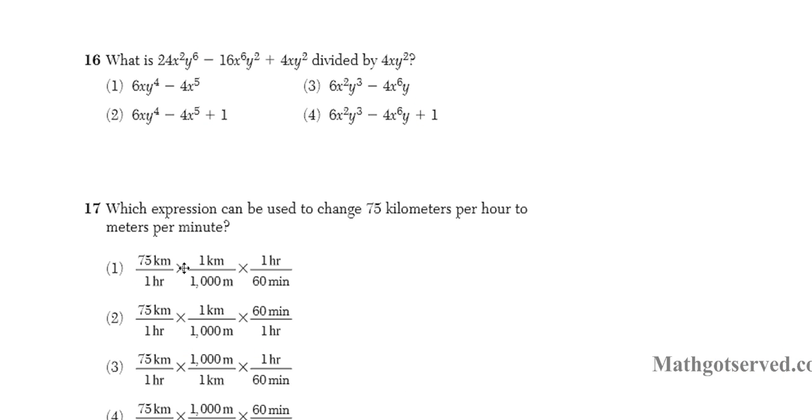For question 16, it says what is 24x²y⁶ - 16x⁶y² + 4xy² divided by 4xy²? So let's go ahead and set this up. Since we are dividing, an easy way to do this is to simply divide every single term by 4xy². So divide every single term by 4xy².